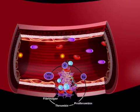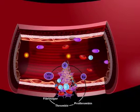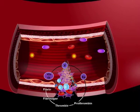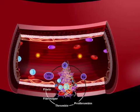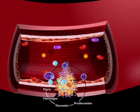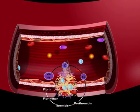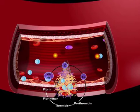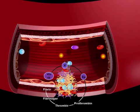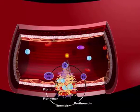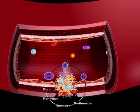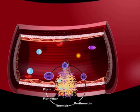Thrombin then activates fibrinogen, or factor I, so that it forms fibrin, also known as factor Ia. Fibrin then fills in the primary hemostatic plug to create a meshwork, which tightly binds the plug together. Red and white blood cells become trapped inside the plug and form a definitive secondary hemostatic plug.